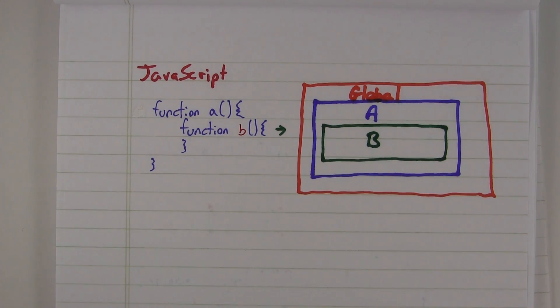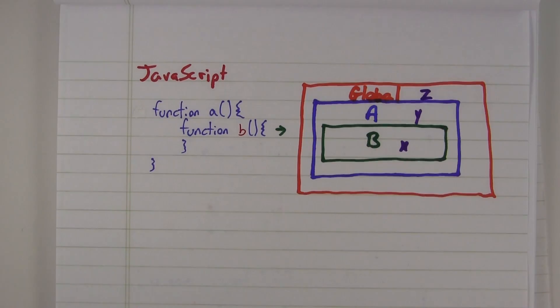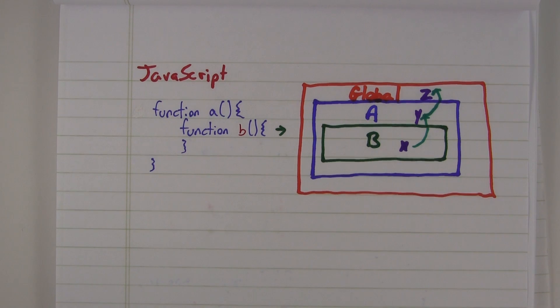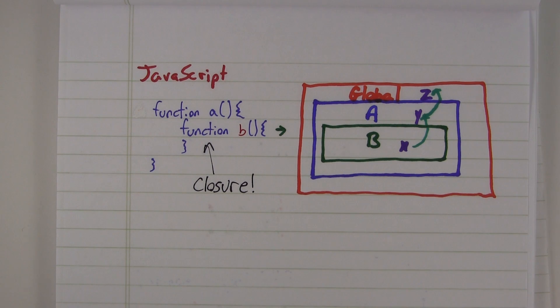That means that variable access traverses up the chain of scopes until it finds the correct scope that the variable was defined in. Therefore, all functions which are defined inside of another function's scope are always closures, even if they are named functions.